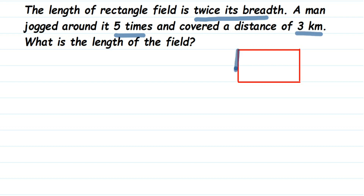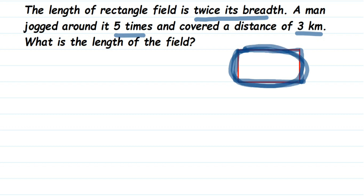Suppose there is a rectangular field and he was jogging around it five times. This is one time, again he went across — this is the second time. Like that he jogged five times and covered a distance of three kilometers. What we have to find out is the length of the field, not the perimeter.